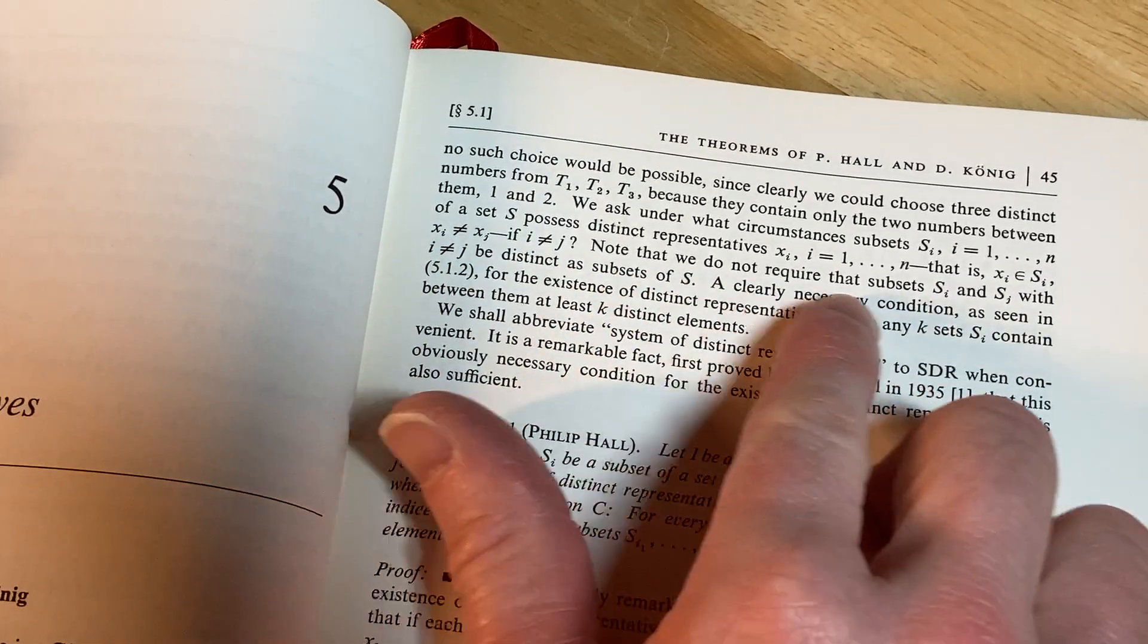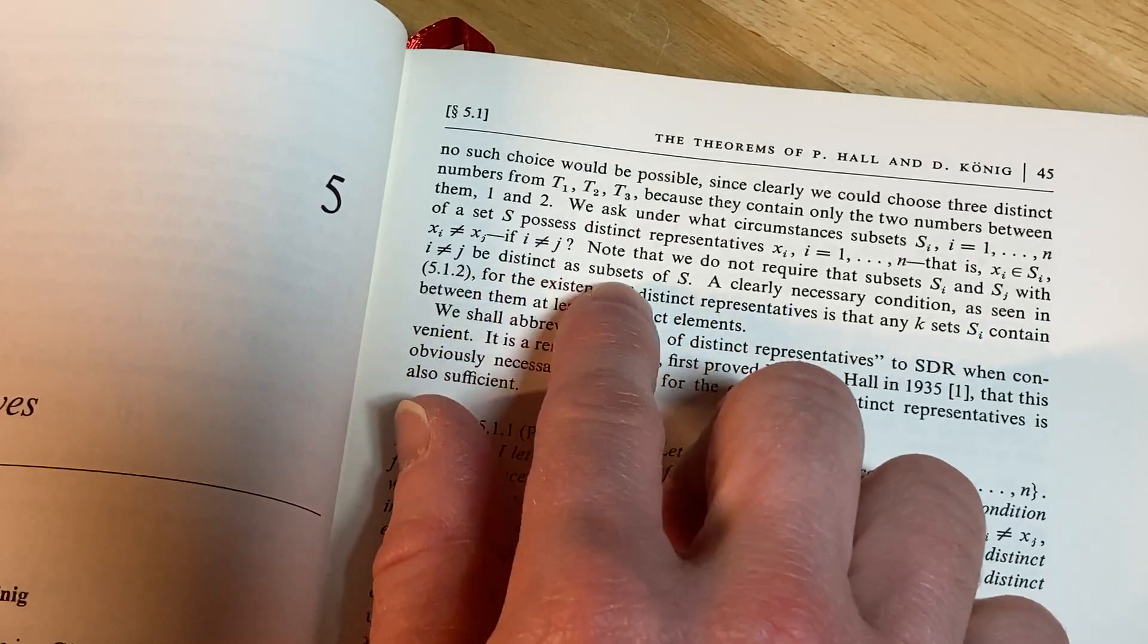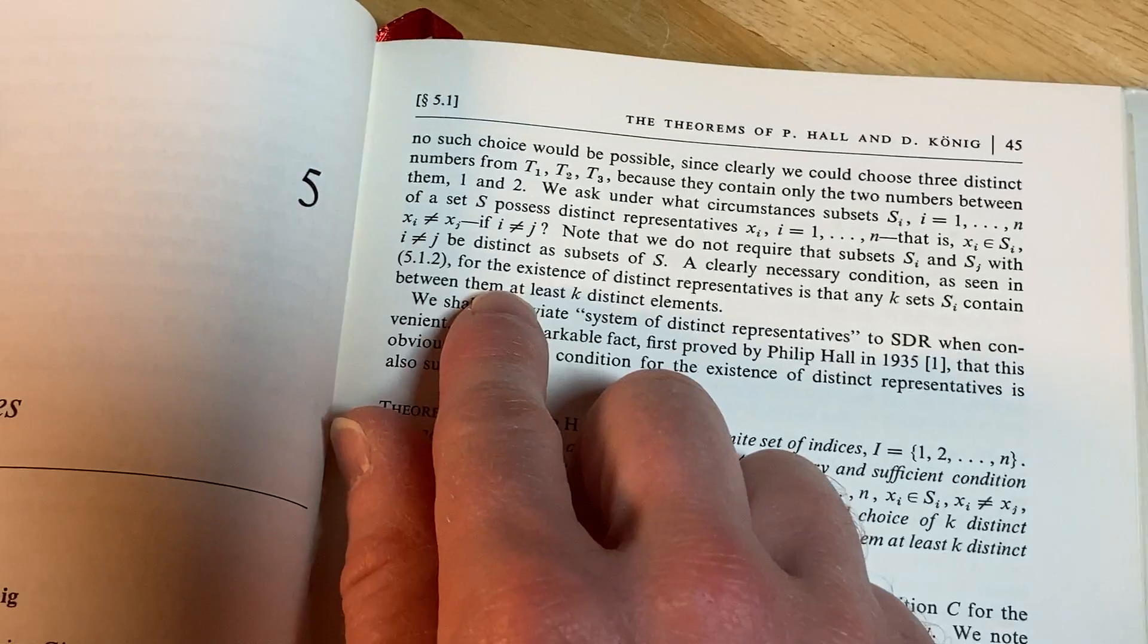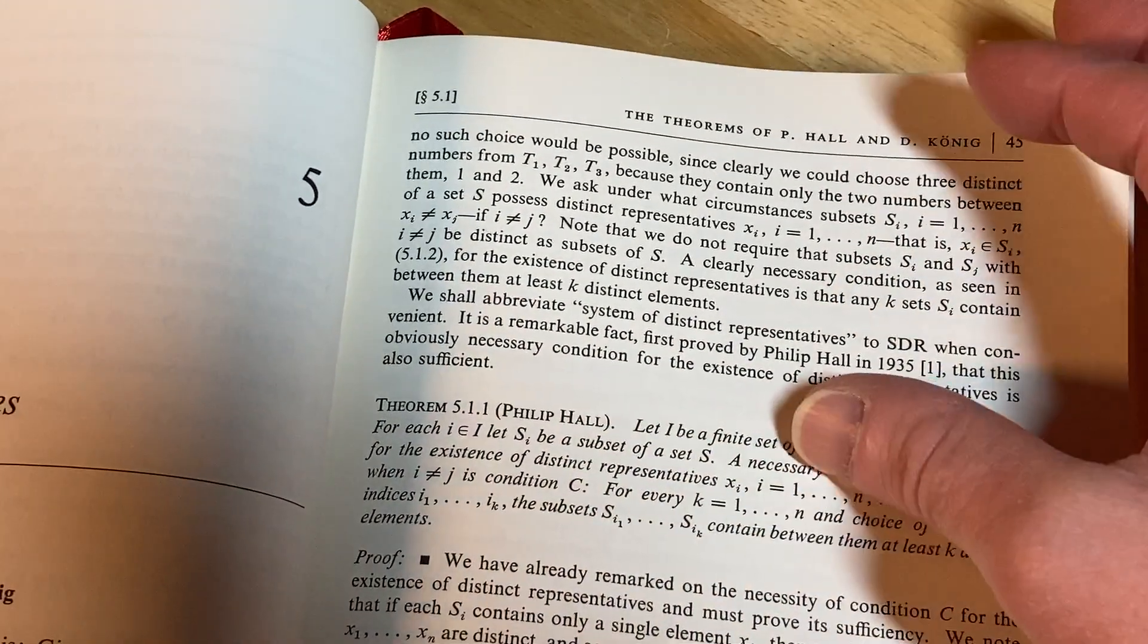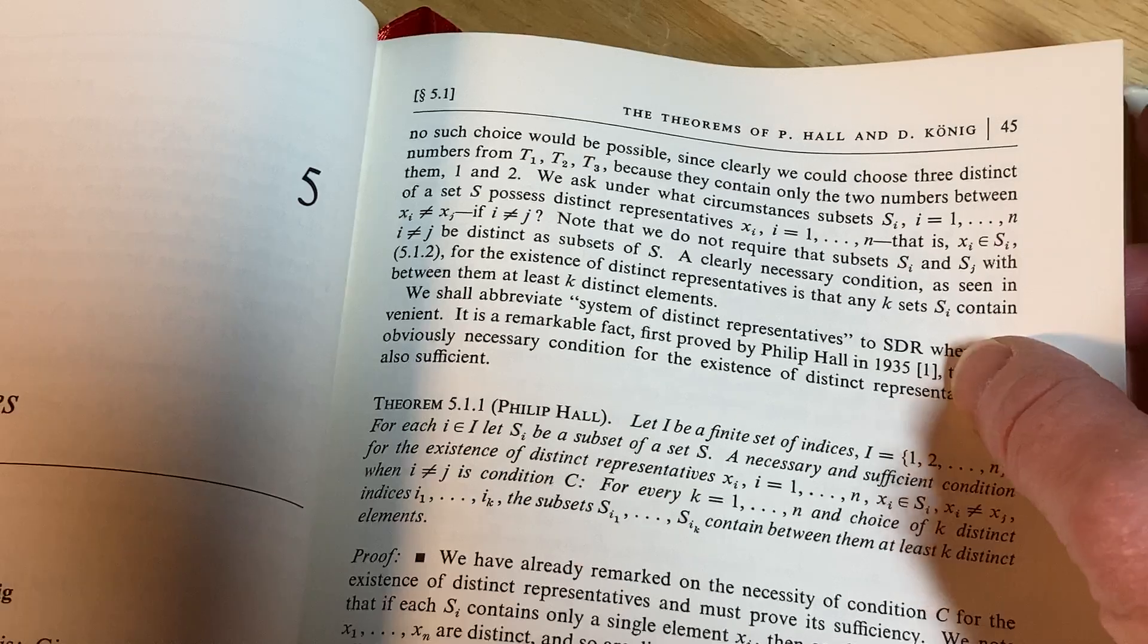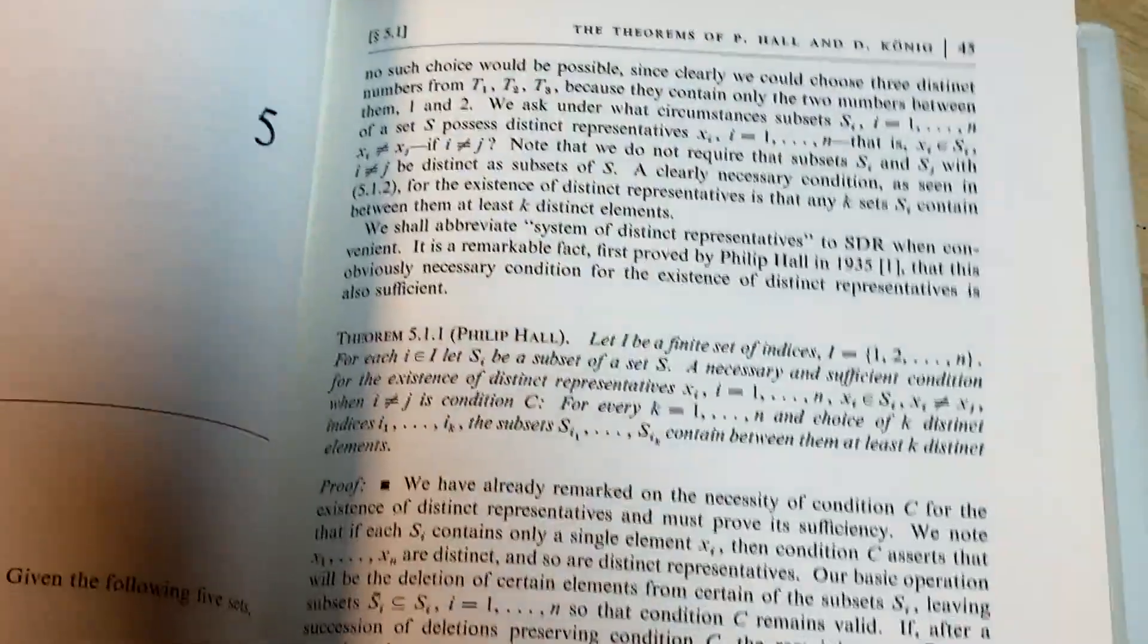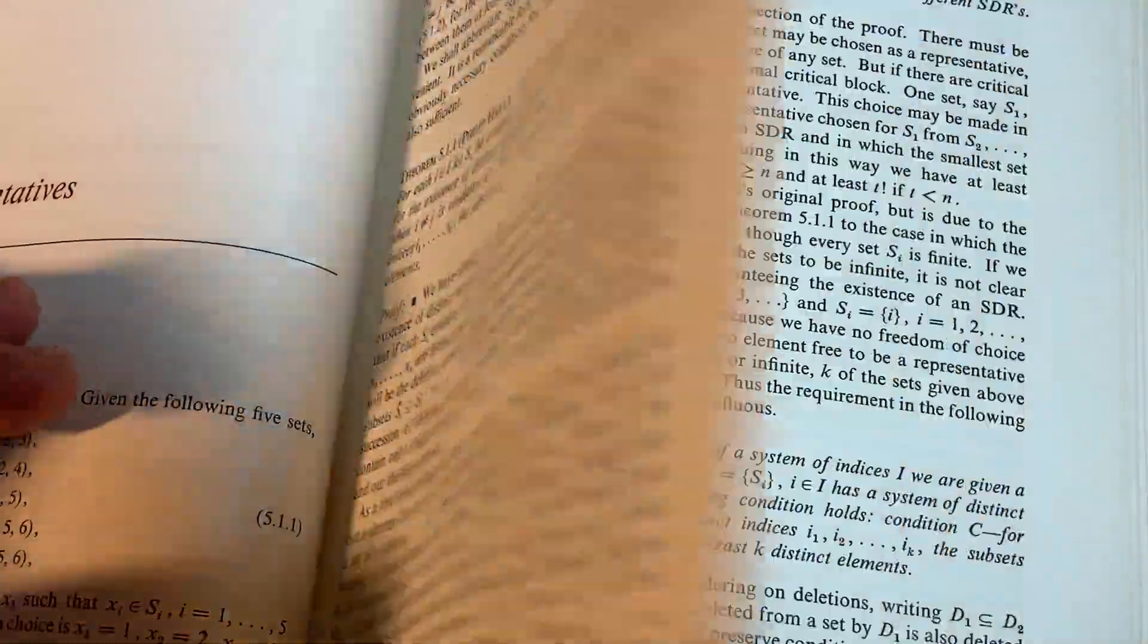We ask under what circumstances subsets sᵢ, i running from 1 through n of a set S possess distinct representatives xᵢ, where i runs from 1 through n. That is xᵢ in sᵢ, and xᵢ not equal to xⱼ if i not equal to j. Note that we do not require that subsets sᵢ and sⱼ with i not equal to j be distinct as subsets of S. A clearly necessary condition, as seen in 5.1.2, for the existence of distinct representatives is that any k sets sᵢ contain between them at least k distinct elements. And I guess here's more of that. So pretty hardcore.